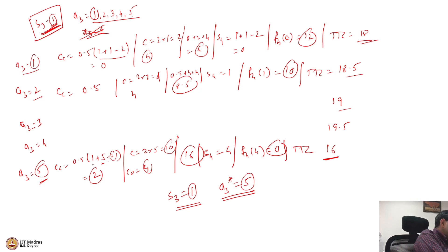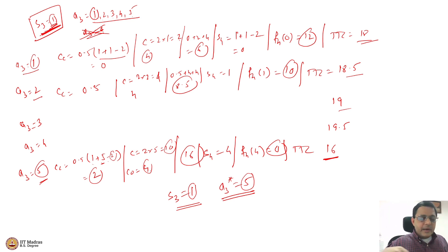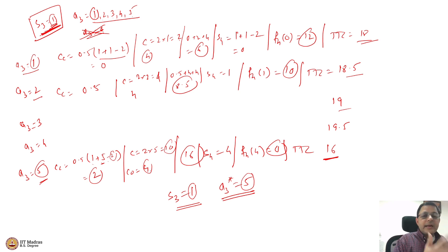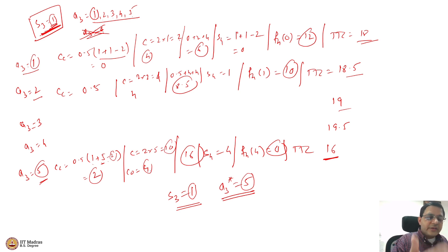Similarly, we can calculate for S3 = 2, 3, 4 and so on. We should be able to automate this. You now understand how to execute backward induction using the Bellman equation. We are currently solving stage 3. Once you solve time period 3, you go back and solve time period 2, then time period 1 — and that is when the entire problem is solved. You will know exactly what to do in any particular stage and state.